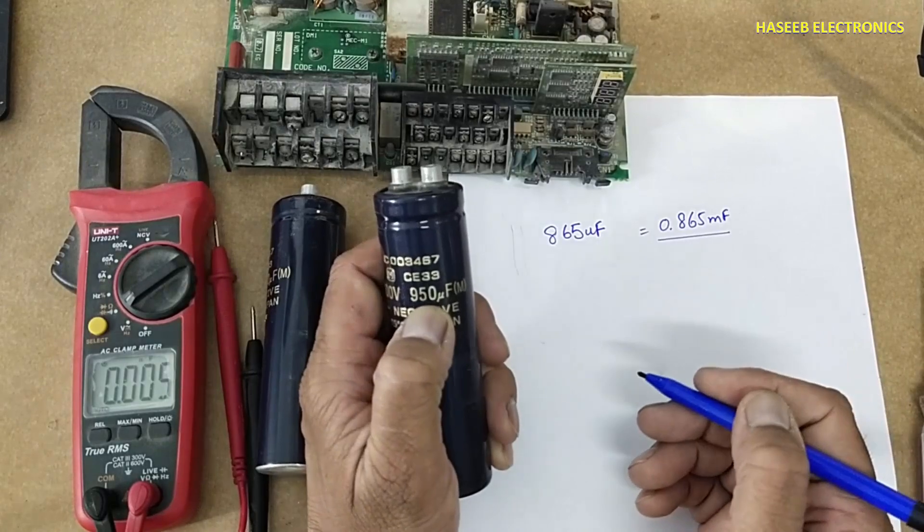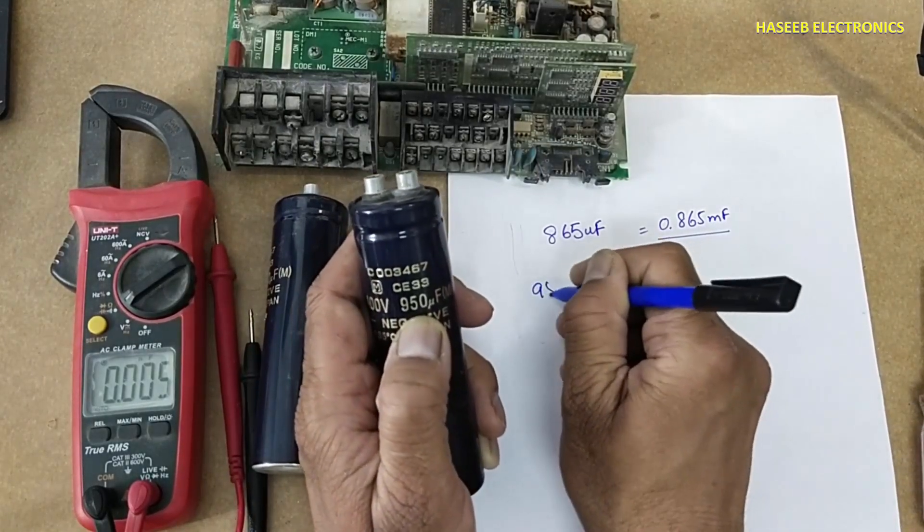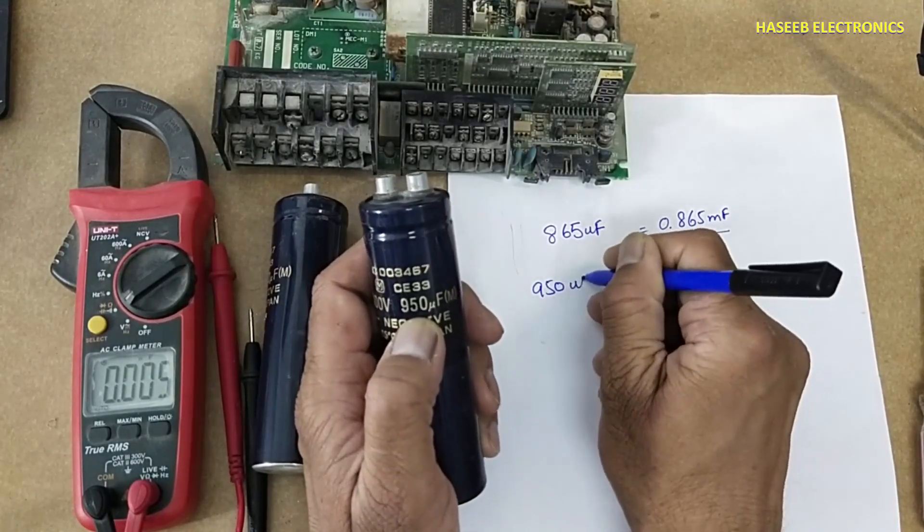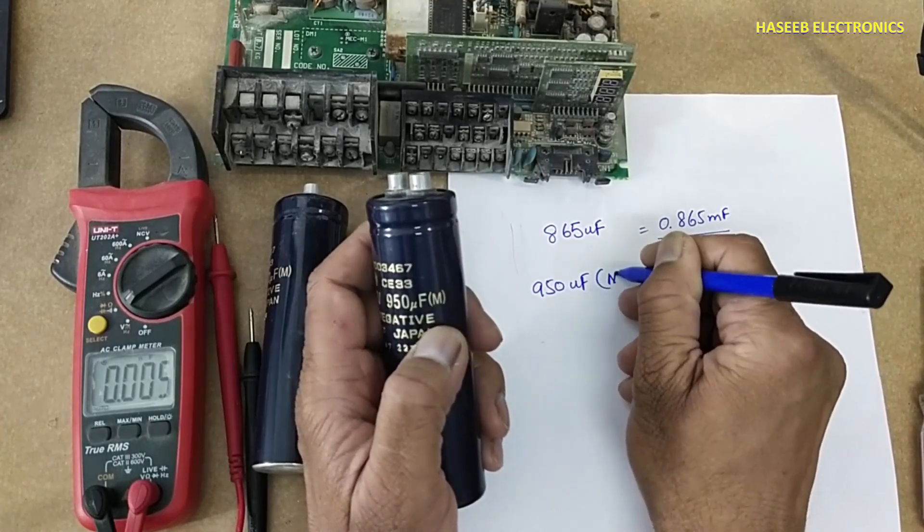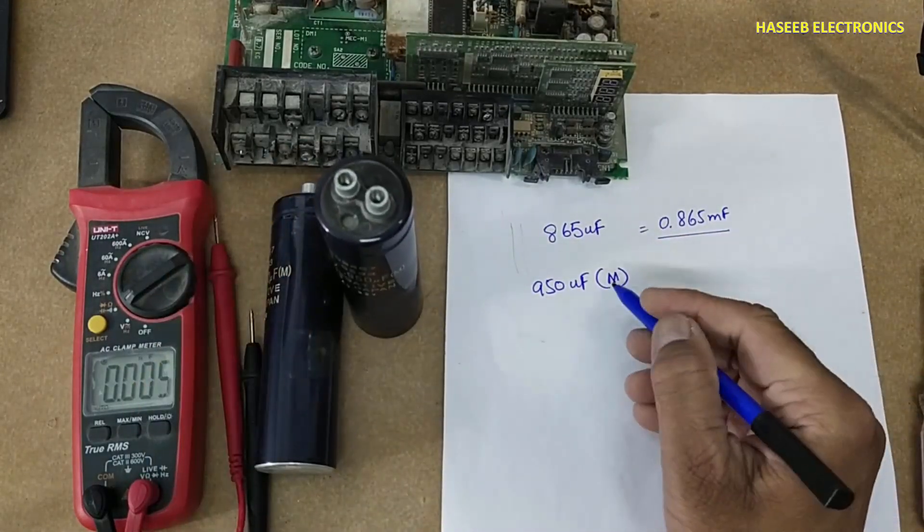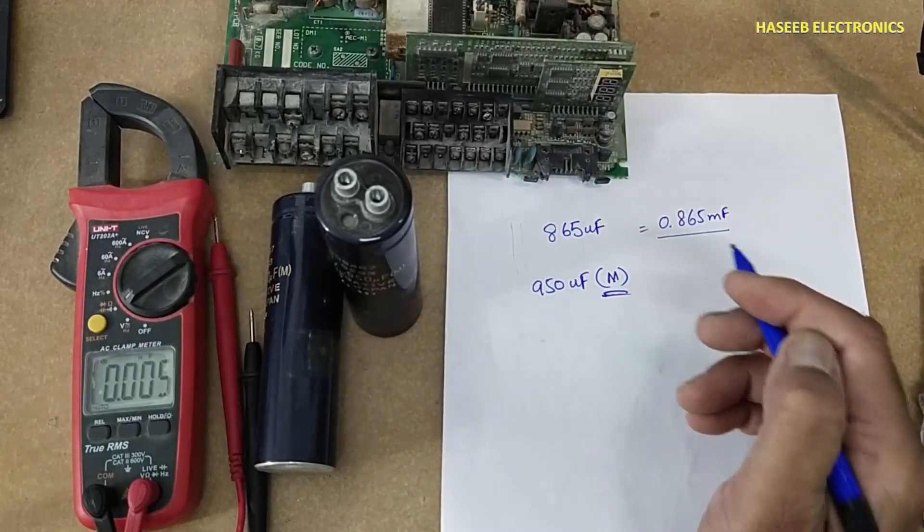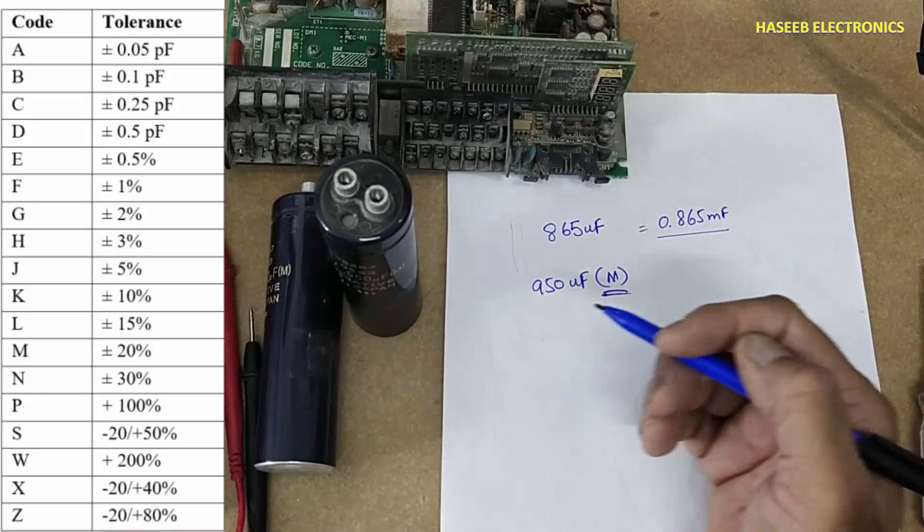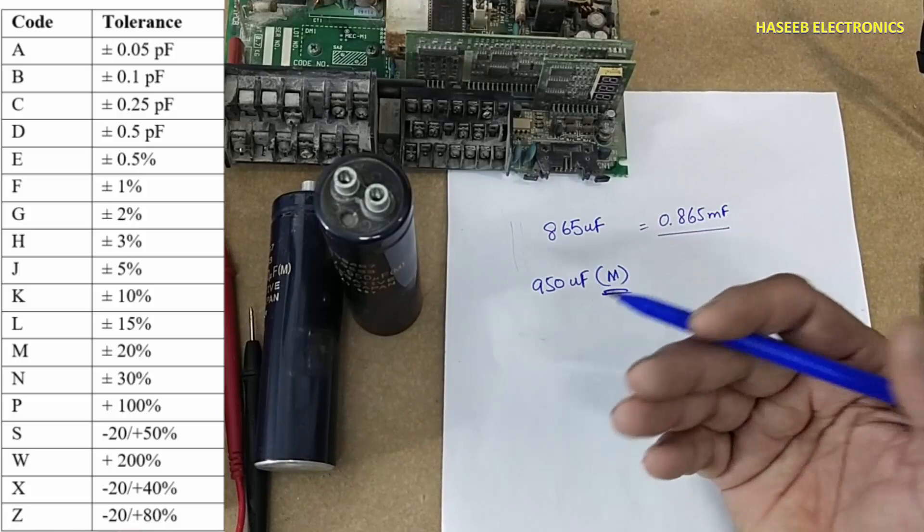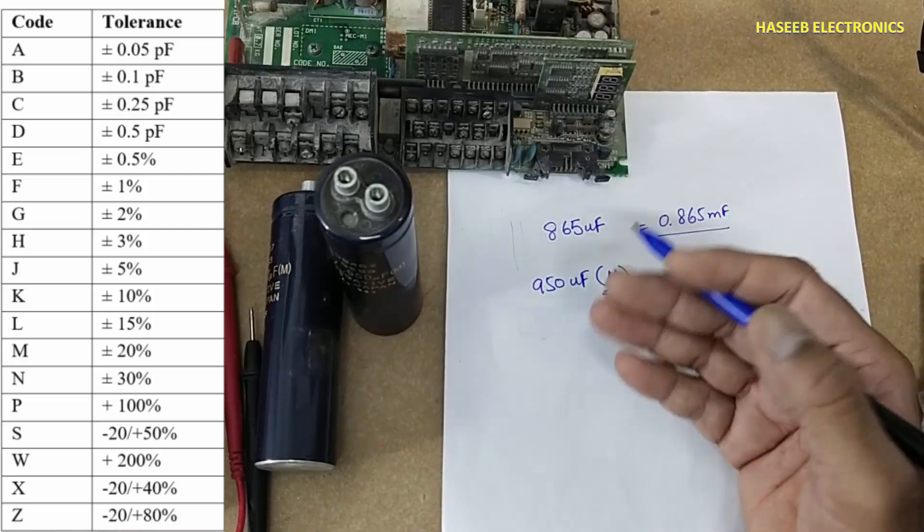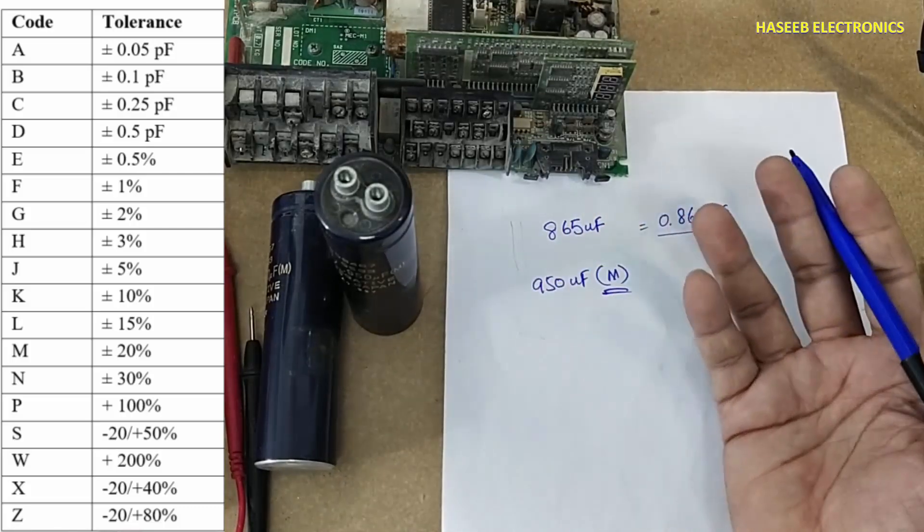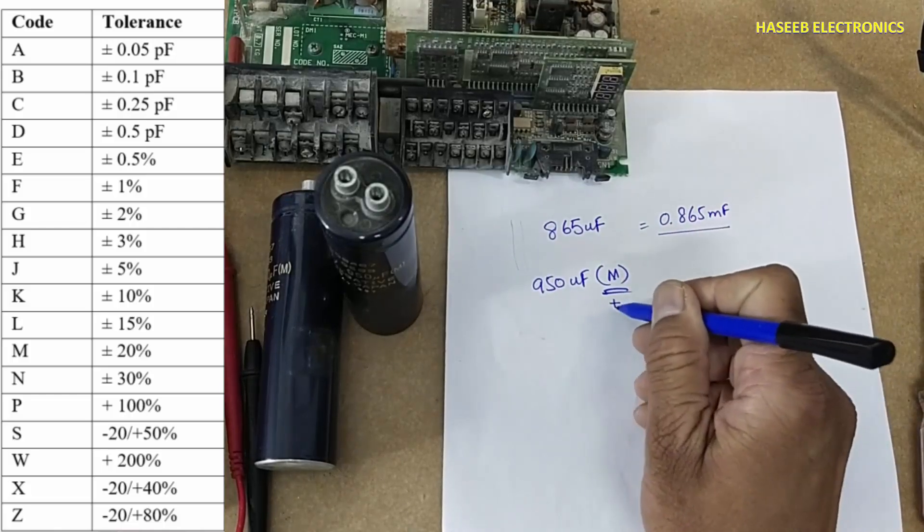The printed value on the body is 950 microfarad 'M'. It is tolerance. When we see the tolerance chart for electrolytic capacitors, some values are plus 10 percent, plus 1 percent, plus 0.5 percent. 'M' means plus minus 20 percent.